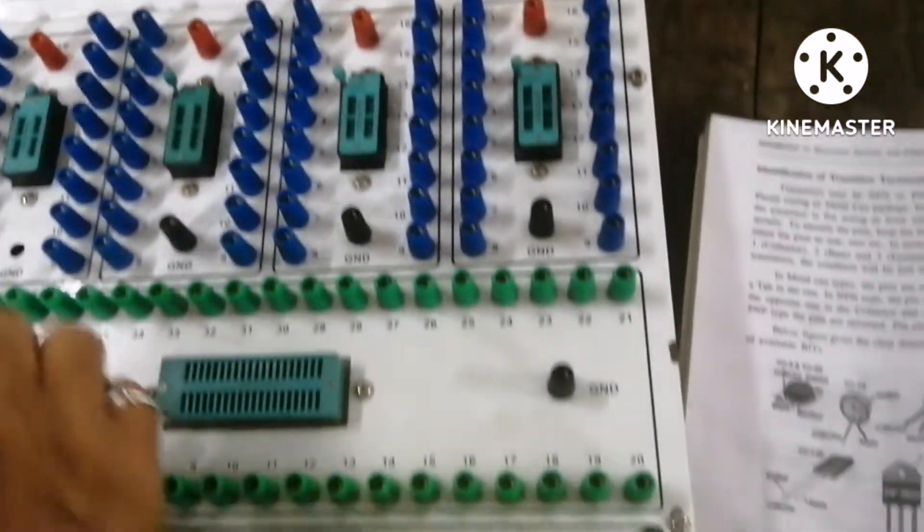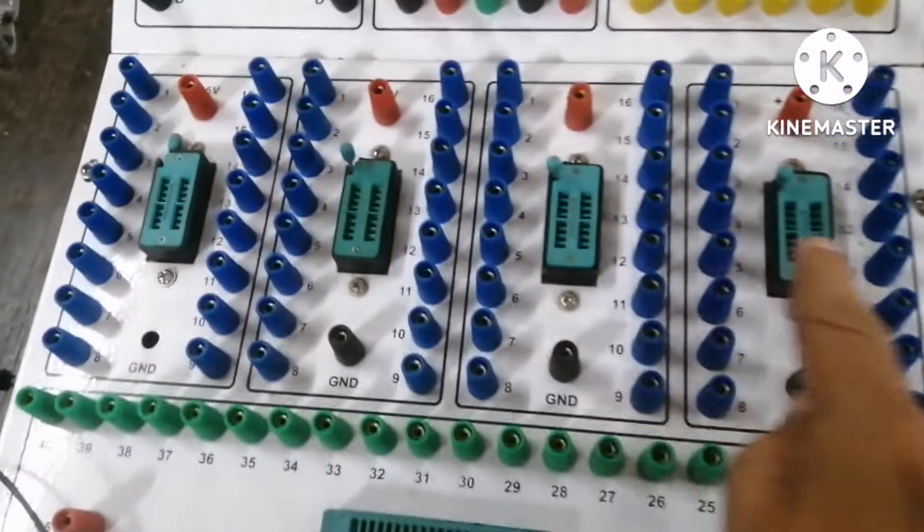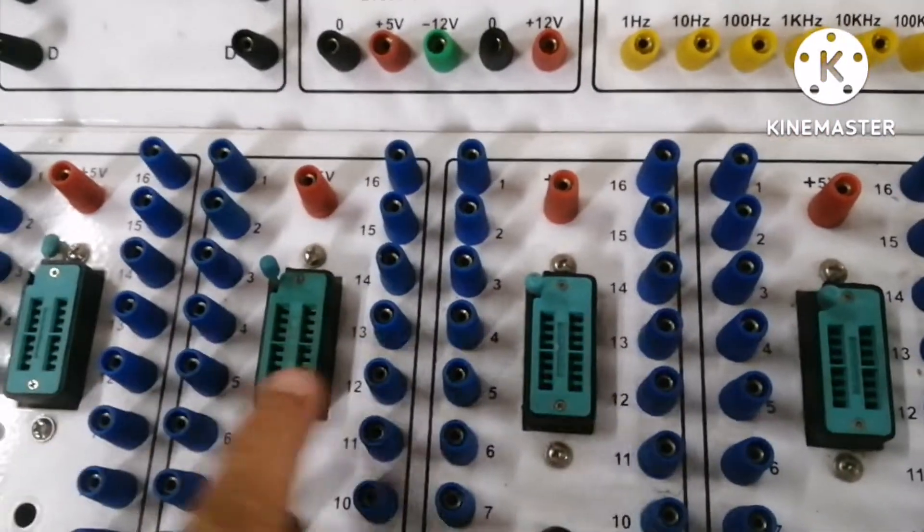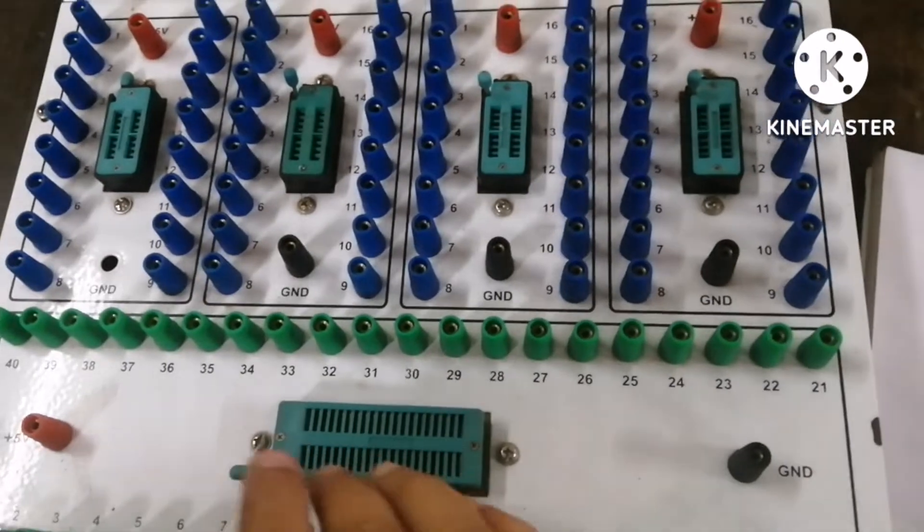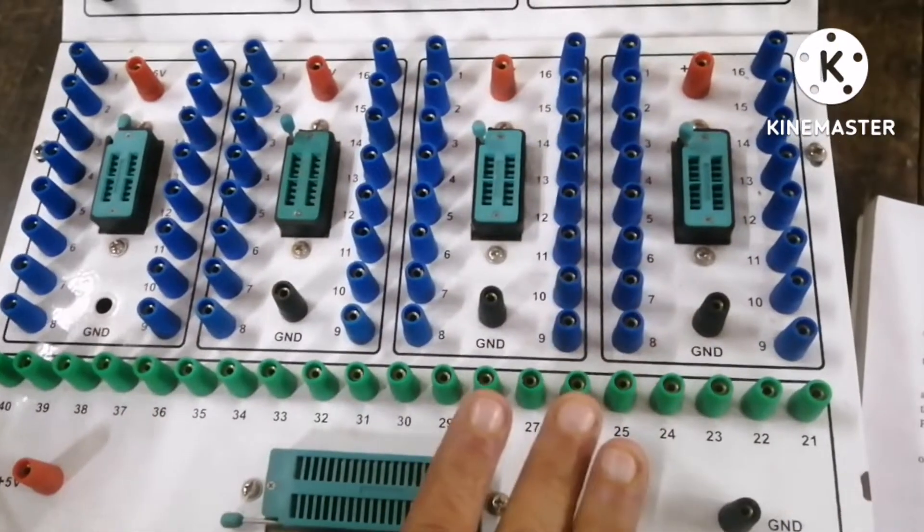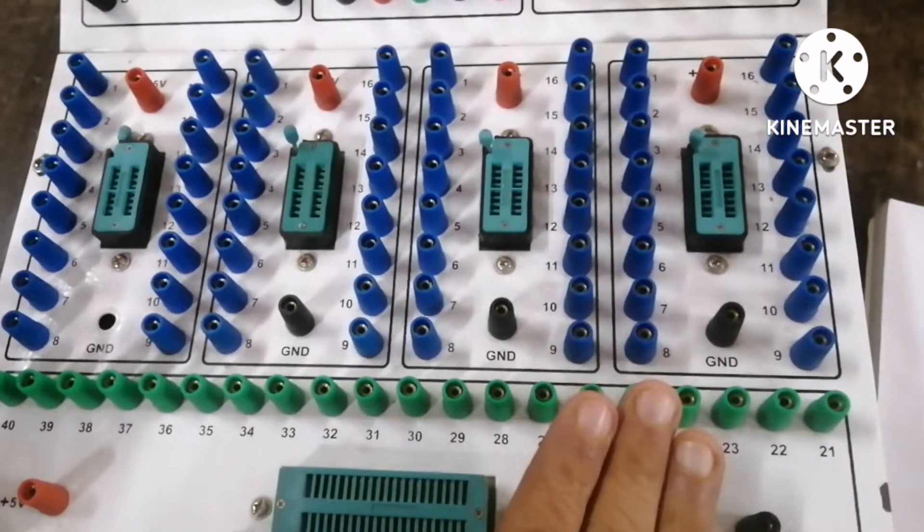So these are the IC zigs over here: 1, 2, 3, 4, 5 zigs are there. So at a time we can insert 5 ICs in this trainer kit.